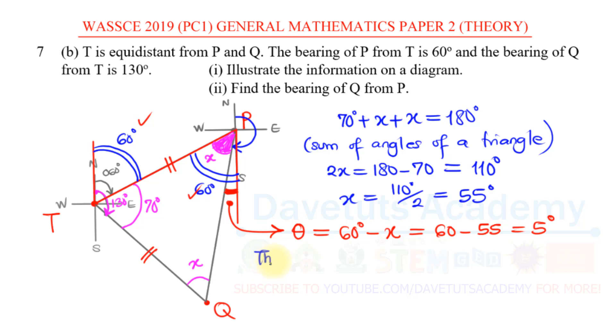But what else will we find? The bearing of Q from P is, look at this straight line, this straight line from the north to the south, that is 180 degrees, in addition to this particular theta that we find, plus theta, and that is 180 degrees plus 5 degrees. So that bearing is 185 degrees.